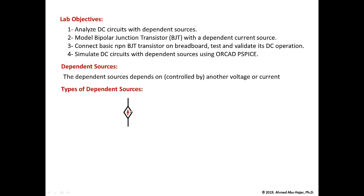If you see an arrow inside the diamond shape, that means it's a current source. In this particular example, this current source depends on Vx and equals three times Vx, where Vx is another voltage in the circuit. This kind of source is called a voltage controlled current source — VCCS — a current source that is controlled by a voltage.